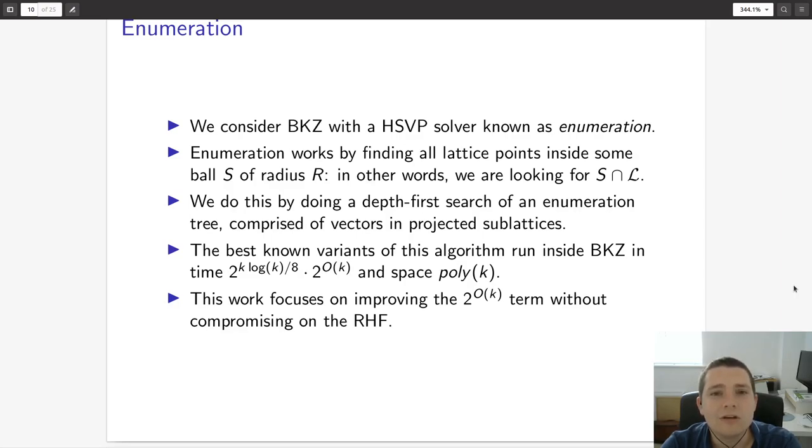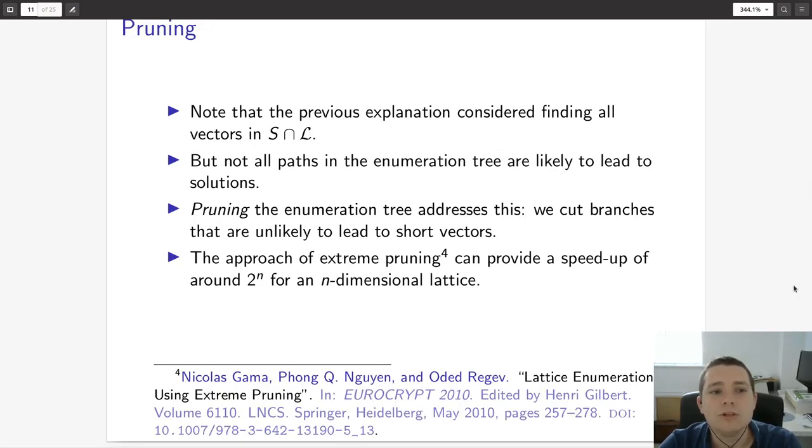In this work, we're focusing on improving this exponential term without compromising on the root Hermite factor. We want to make sure that no matter what we do, we maintain the quality of the basis output by BKZ. One classic approach to doing this is known as pruning. Intuitively, the way you can think about this is that the previous explanation considered finding all vectors inside this set S intersect L. But not all paths in the enumeration tree are likely to lead to solutions. The enumeration tree is very large and we don't expect there to be that many short vectors. As a result, a typical approach is to cut off some of these paths that we don't need. This is referred to as pruning. We simply cut off branches in the enumeration tree that are unlikely to lead to short vectors.